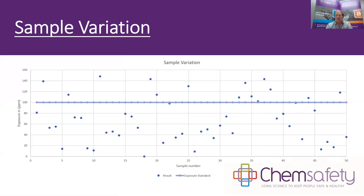Why don't we just take one sample? Here is an example of how exposure can vary over time. We've got 50 different measurements, with the exposure standard set here at 100. As you can see, exposures are all over the place — most are below the exposure standard, but we still have 14 samples above it. So over those 50 days, 14 of them the worker was above the exposure standard and therefore at potential harm.